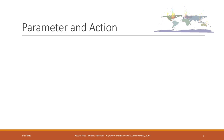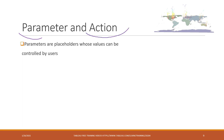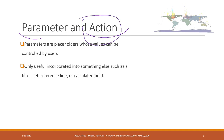Let's talk about another very important concept of function in Tableau called parameter. We always use parameters connected with action. Parameters are just placeholders whose values can be controlled by users, either through the parameter controls or through the actions. Parameters are only useful when they are incorporated into something like filters, sets, reference lines, or calculated fields.